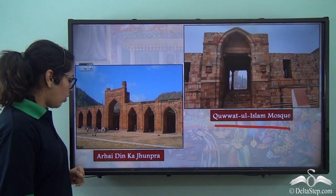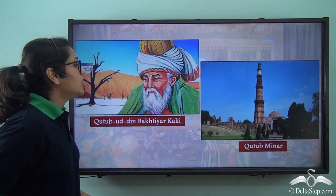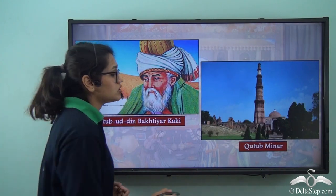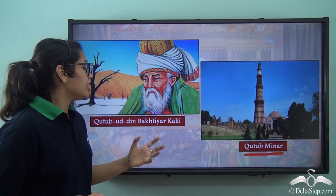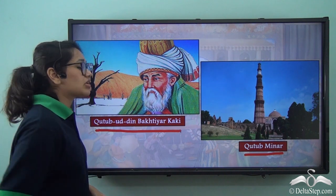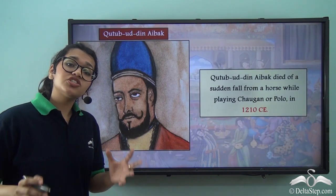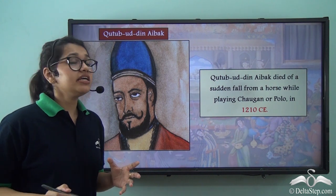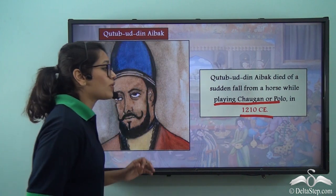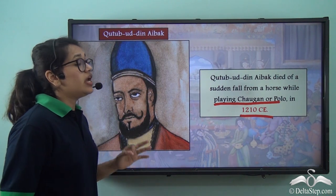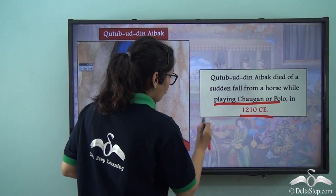He also constructed the Rai Dinka Jhunpura. He began the construction of the famous Qutub Minar in honour of Qutubuddin Bhaktiyar Kaki. However, before its construction could be completed, he fell off his horse while playing Chogan, or Polo, in the year 1210 CE. He was the ruler of the Mamluk dynasty for just four years.